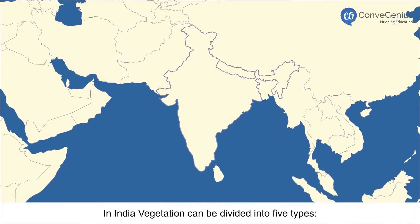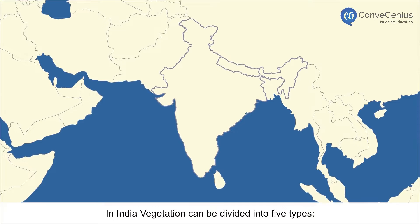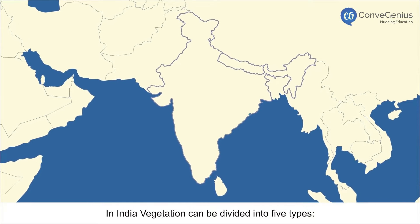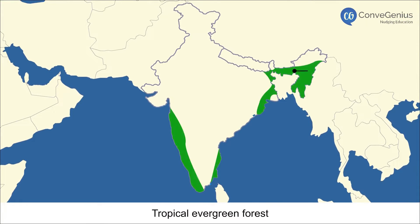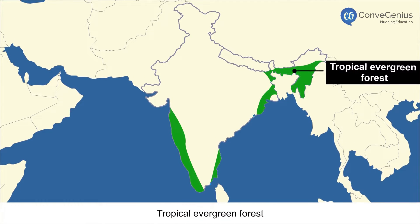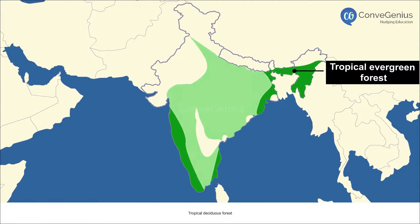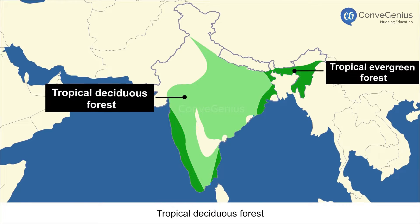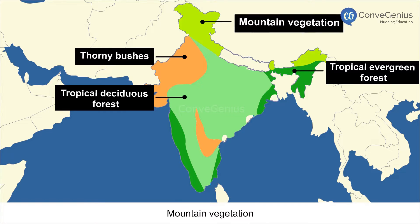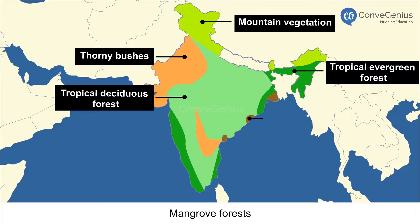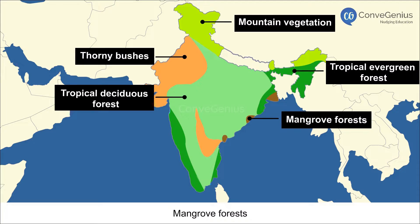In India, vegetation can be divided into five types: Tropical Evergreen Forest, Tropical Deciduous Forest, Thorny Bushes, Mountain Vegetation, and Mangrove Forests.